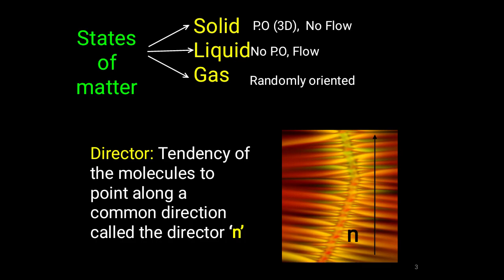To summarize the states of matter: solids have positional order in three dimensions and no flow of atoms; liquids have no positional order but you can observe flow; gases are randomly oriented. In liquid crystals, the concept of the director plays a very significant role. The molecules possess orientational order — they tend to remain in a particular direction. The direction of preferred orientation of molecules in a liquid crystalline phase is called the director. Since molecules are in constant motion, they spend more time pointing along the director than any other direction.